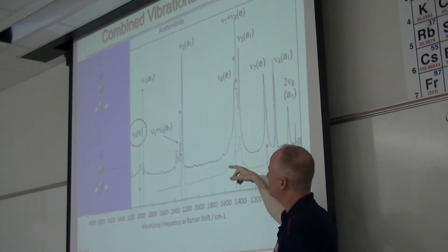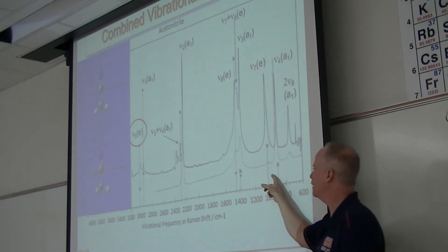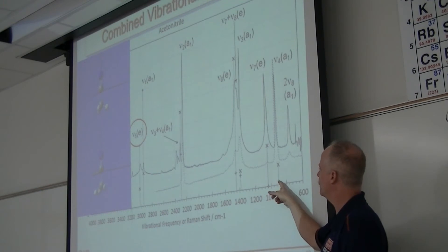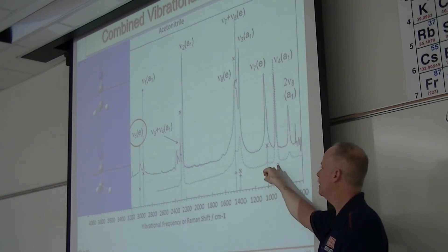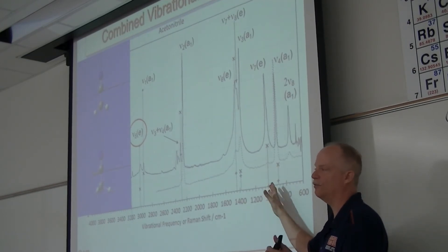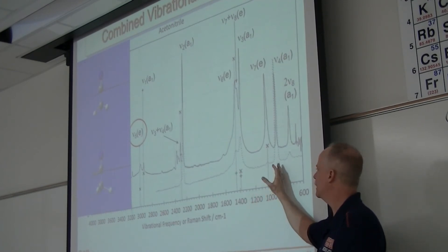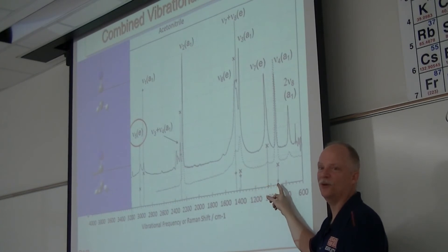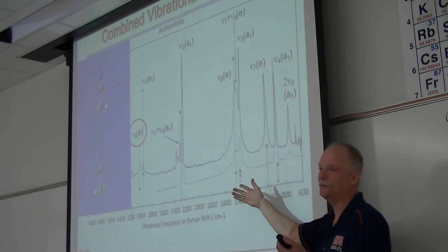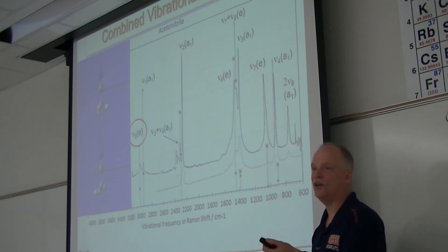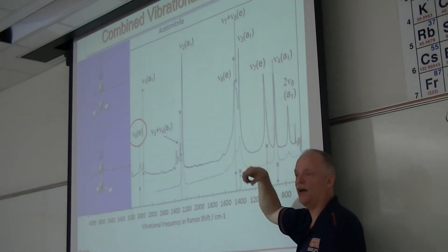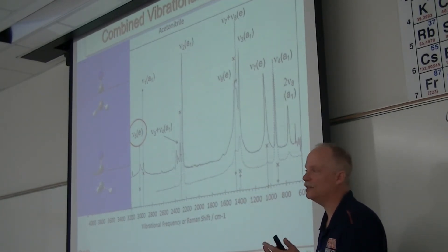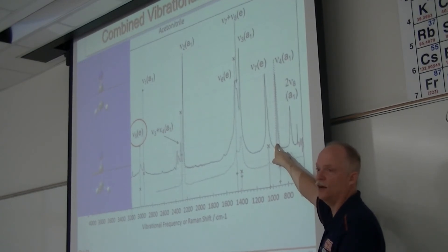Those are all the vibrational modes of acetonitrile, and they're all Raman active too. On this chart I have a stick spectrum showing the Gaussian results — the little X's are the Raman results and the pluses are the IR results. You calculated the Gaussian vibrational frequencies for these two molecules. You pull the IR intensity and IR frequency, scale the frequency by about 0.915, and look how close it lines up. That's how you assign a spectrum.